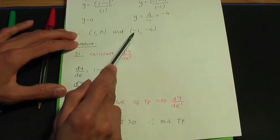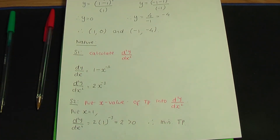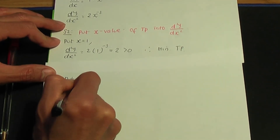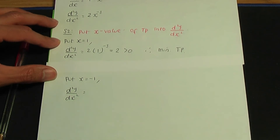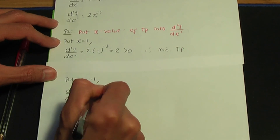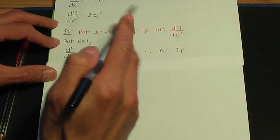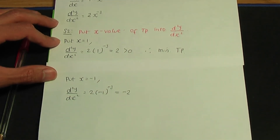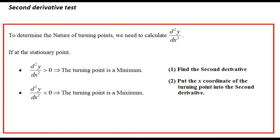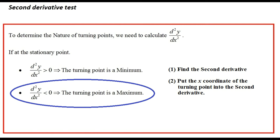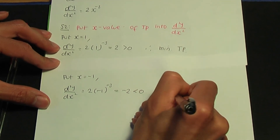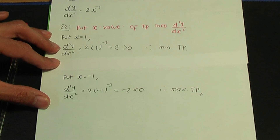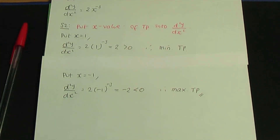For the second turning point at x = −1: d²y/dx² = 2(−1)⁻³ = −2, which is less than zero. According to the second derivative test, this corresponds to a maximum turning point. That completes example 1.